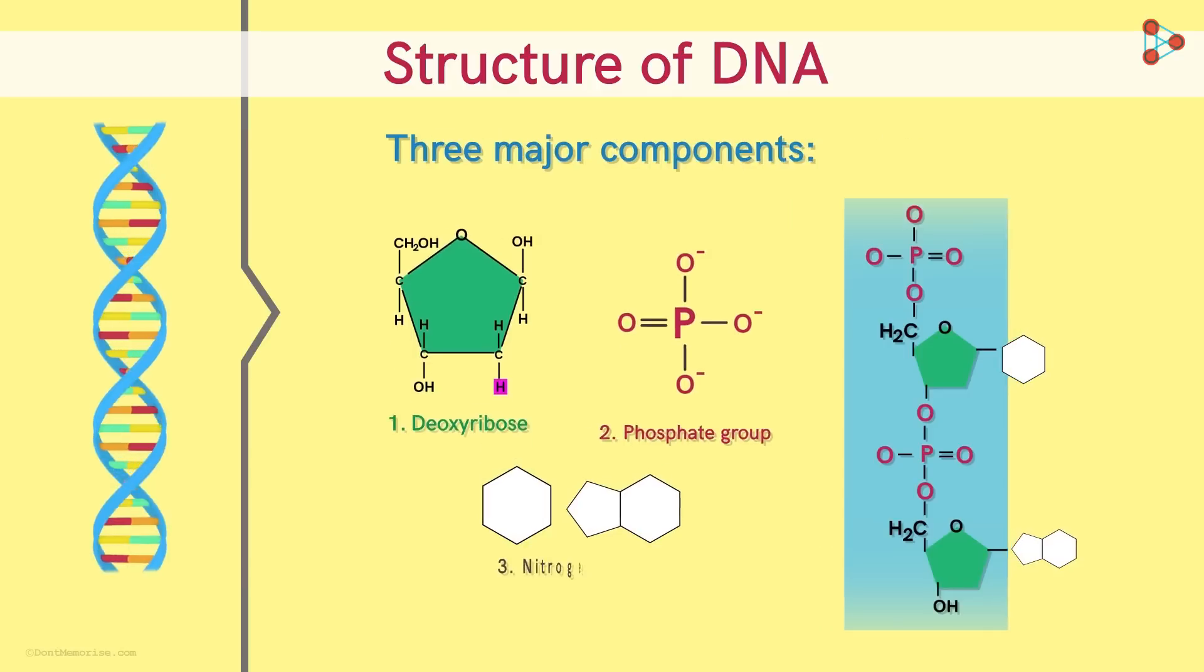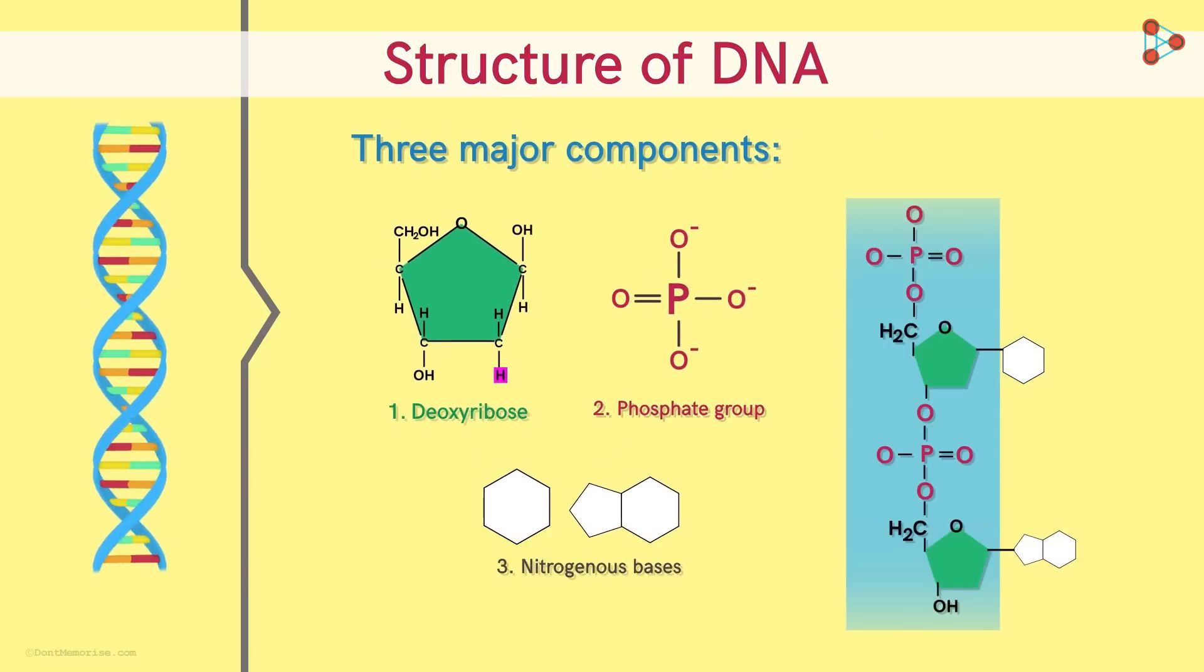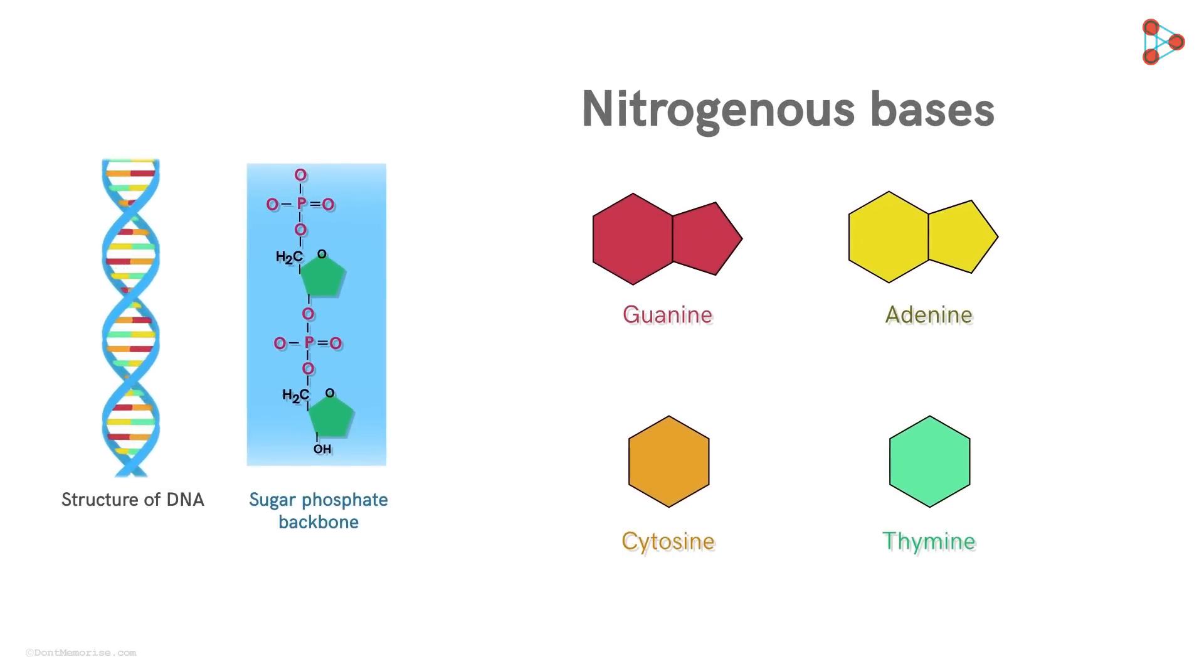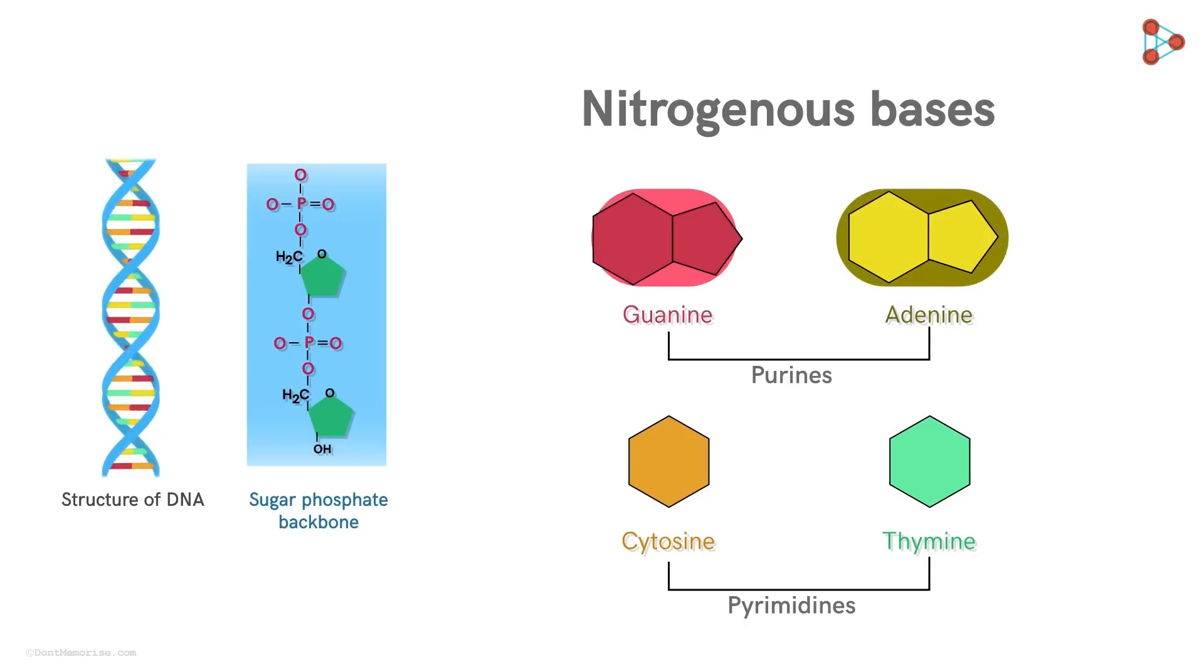Lastly, the Nitrogenous base forms the core of the double helix. These are four different molecules that bind in pairs. Two of them are called Purines and the other two are called Pyrimidines. Adenine and Guanine are the two Purines which bond with the Pyrimidines Thymine and Cytosine.